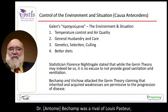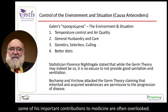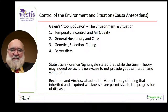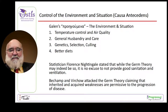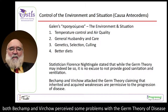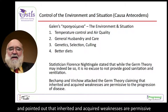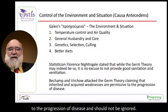Dr. Béchamp was a rival of Louis Pasteur, and for this reason some of his important contributions to medicine are often overlooked. Dr. Virchow is undoubtedly the unquestionable father of pathology as we know it today. However, both Béchamp and Virchow perceived some problems with the germ theory of disease and pointed out that inherited and acquired weaknesses are permissive to the progression of disease and should not be ignored.